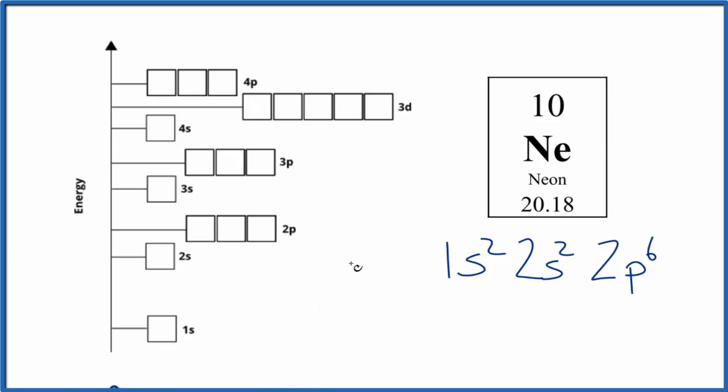So let's start. We have 1s², so we'll put the two electrons in opposite directions here. 2s², again opposite directions. In 2p⁶: 1, 2, 3, 4, 5, 6.